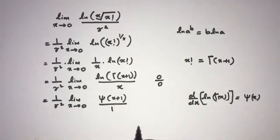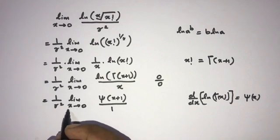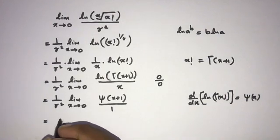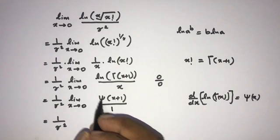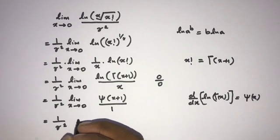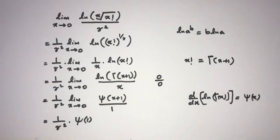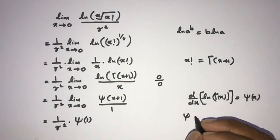Okay, now if we plug in 0, so here 1 over gamma squared. Now here, digamma of 1. Okay, we know digamma of 1...